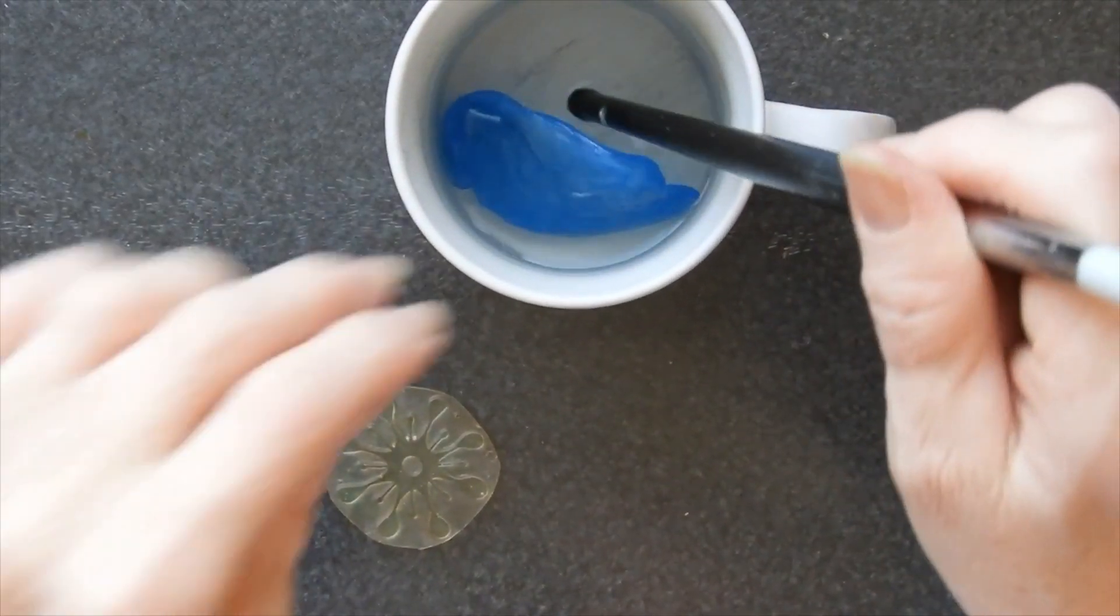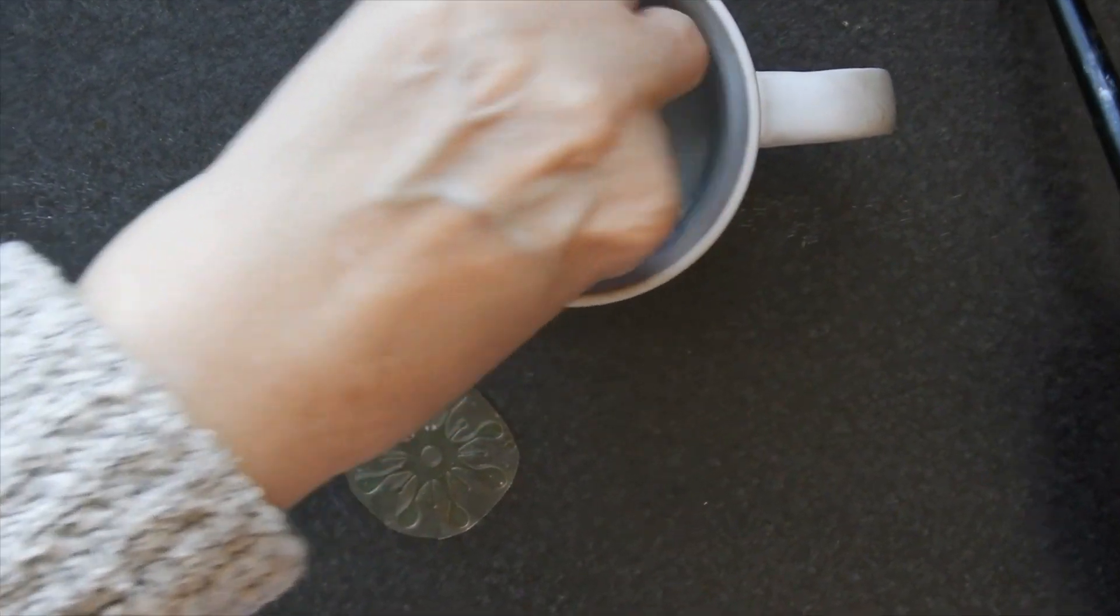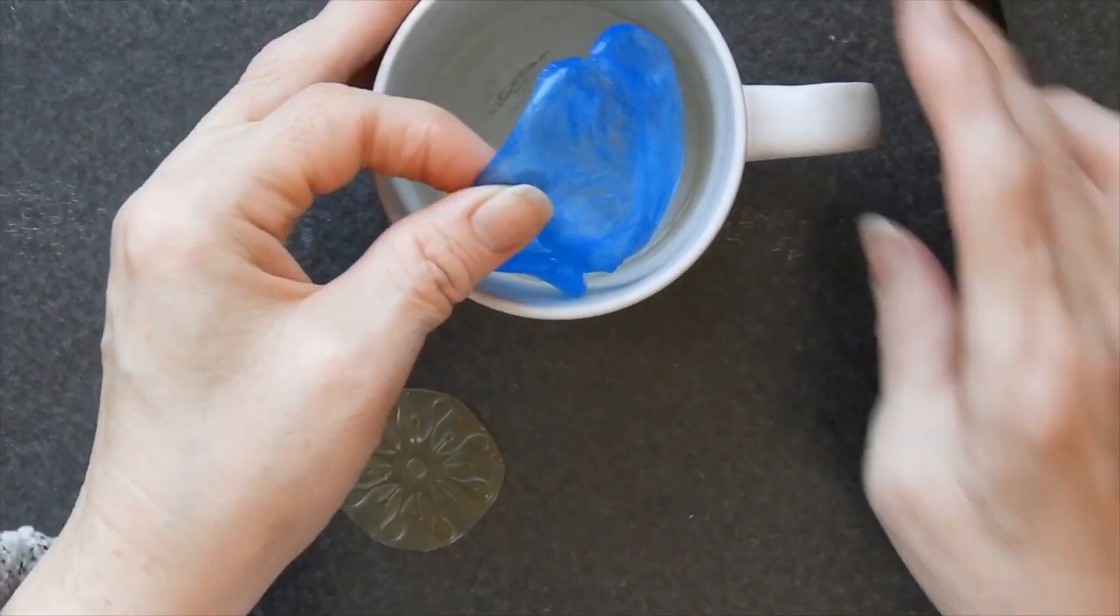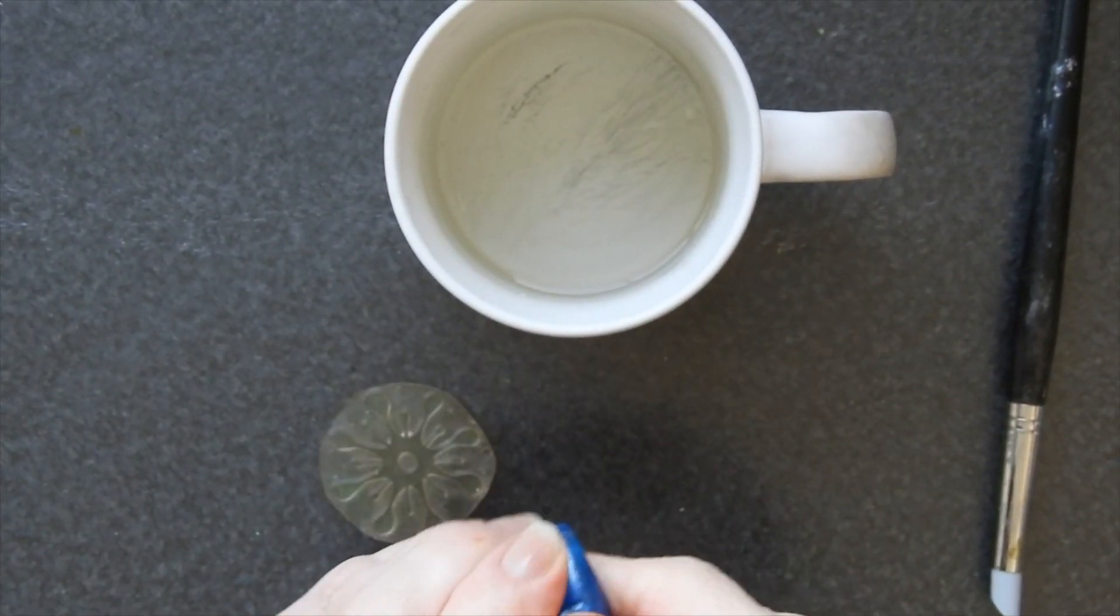You either want to use some gloves or you want asbestos fingers. I did actually give myself a bit of a yelp when I took this out of the hot water because it's pretty hot. Now I have one of my stamps here which I'm going to try and replicate by making a mold.